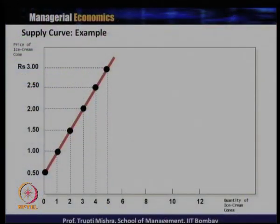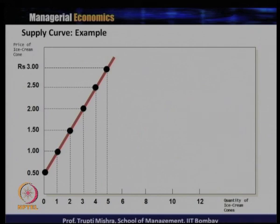If we take data directly from the supply schedule, the y-axis gives us the price of an ice cream cone and the x-axis gives us the quantity of ice cream cone. The price starts from 0, then 0.5, 1, 1.5, 2, 2.5, 3 — price is increasing. And with the increase in price, the quantity supplied is also increasing.